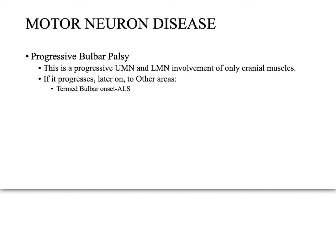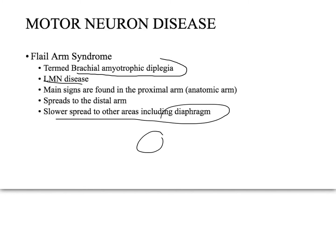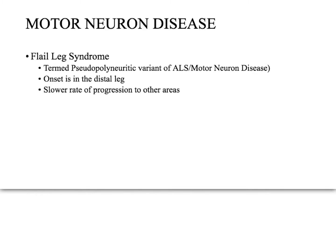Progressive bulbar palsy involves both upper and lower motor neurons, but only the cranial muscles are affected. When it progresses to other areas, it is termed bulbar onset ALS. Flail arm syndrome, or brachial amyotrophic diplegia, involves only lower motor neurons, starts proximal and moves distal, and can slowly spread including to the diaphragm. Flail leg syndrome also progresses slowly, but starts distal and moves proximal — the opposite direction of flail arm.